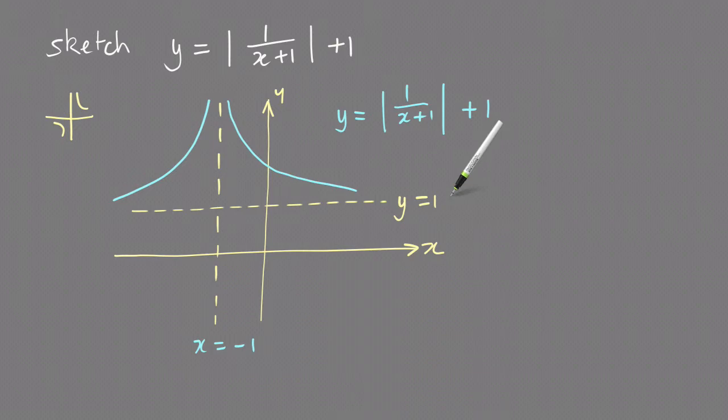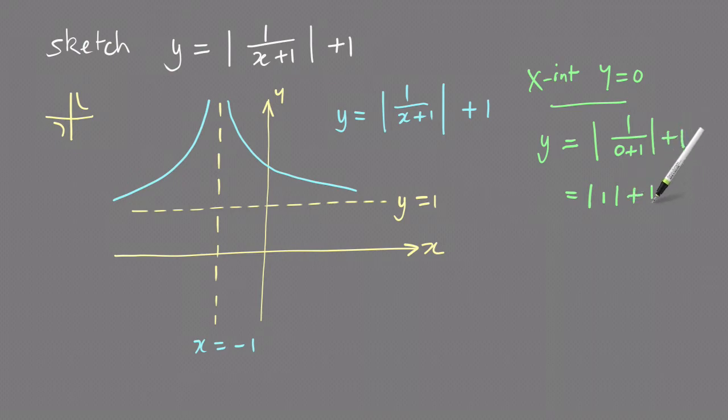So there's the graph of this equation, and it also has an x-intercept. To find the x-intercept you do what you always do, and that's just let y equal 0. So you end up with y equals the absolute value of 1 over 0 plus 1 plus 1, which is the absolute value of 1 over 1, which is 1, plus 1. So that's equal to 1 plus 1, which equals 2. So that is the value 2, and voila, there's the graph of y equals the absolute value of 1 over x plus 1 plus 1.